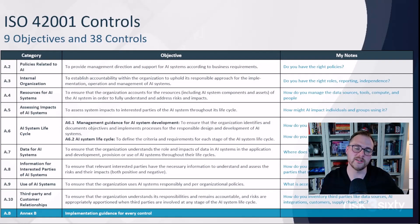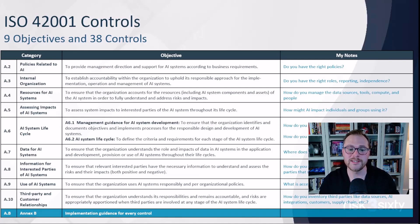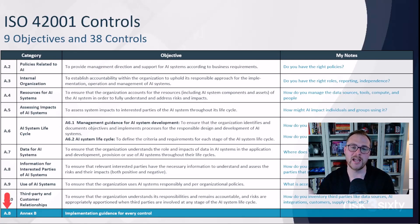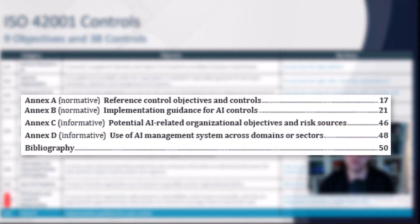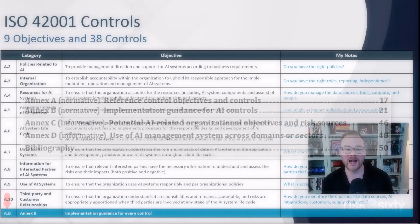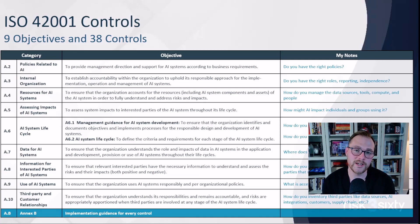That covers the control objectives for ISO 42001 at a high level. For detailed implementation guidance, go to Annex B of the framework. Annex B takes each and every control and provides up to a page of commentary on how to think about and implement that particular control, including tactical guidance and examples. It would merit its own course to cover fully, but I highly recommend reading it if you're considering ISO 42001.